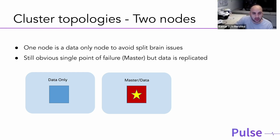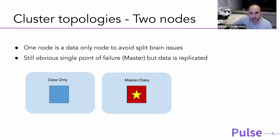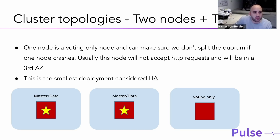With only two nodes, you still have just one master node, which is a risk. Also, having a data node double as a master node is an issue — when the data node is working very hard, the master role may be starved for resources and won't have enough to maintain cluster state, respond to pings, and do all the things master nodes need to do.